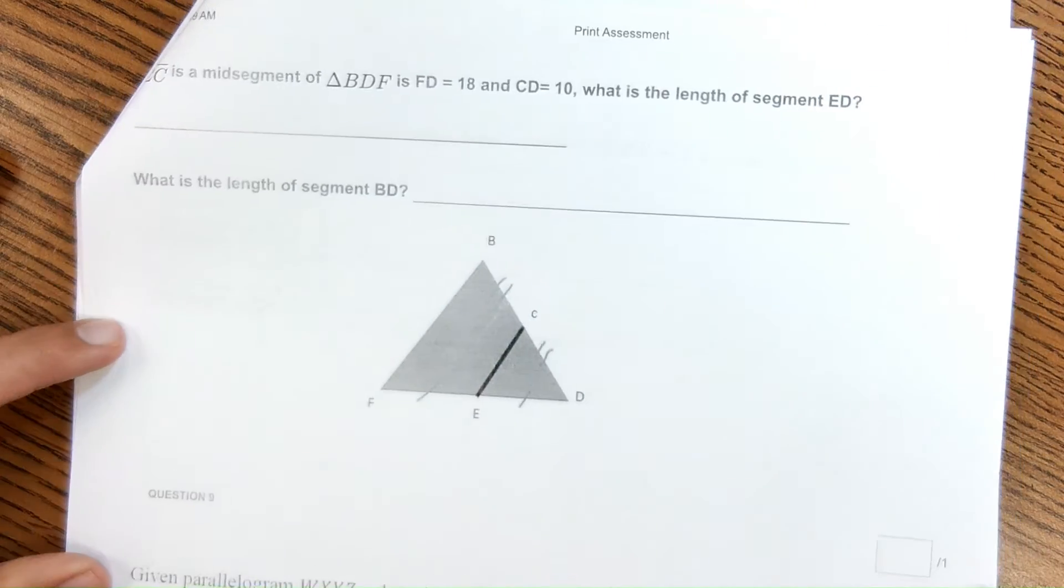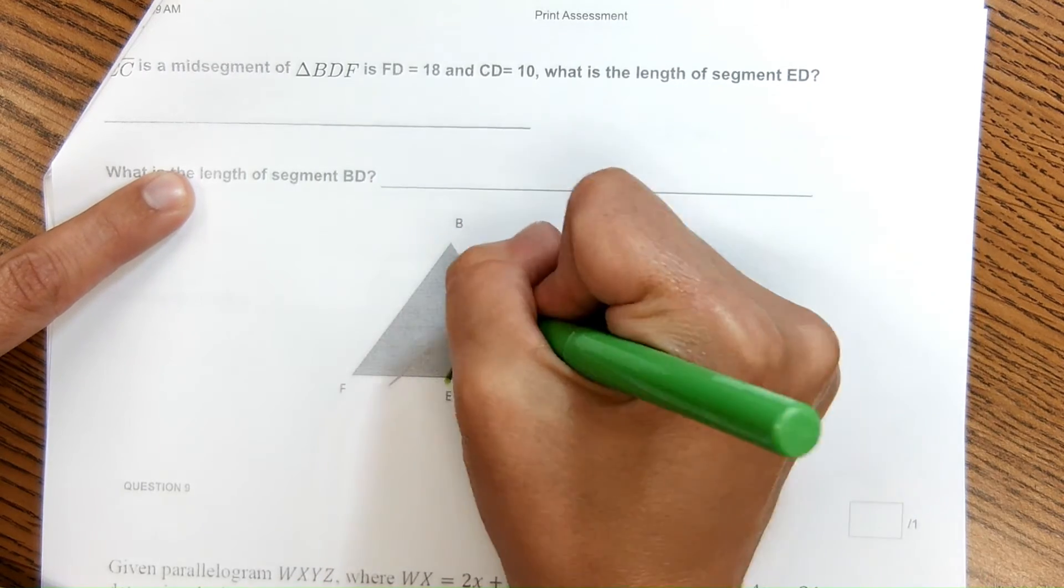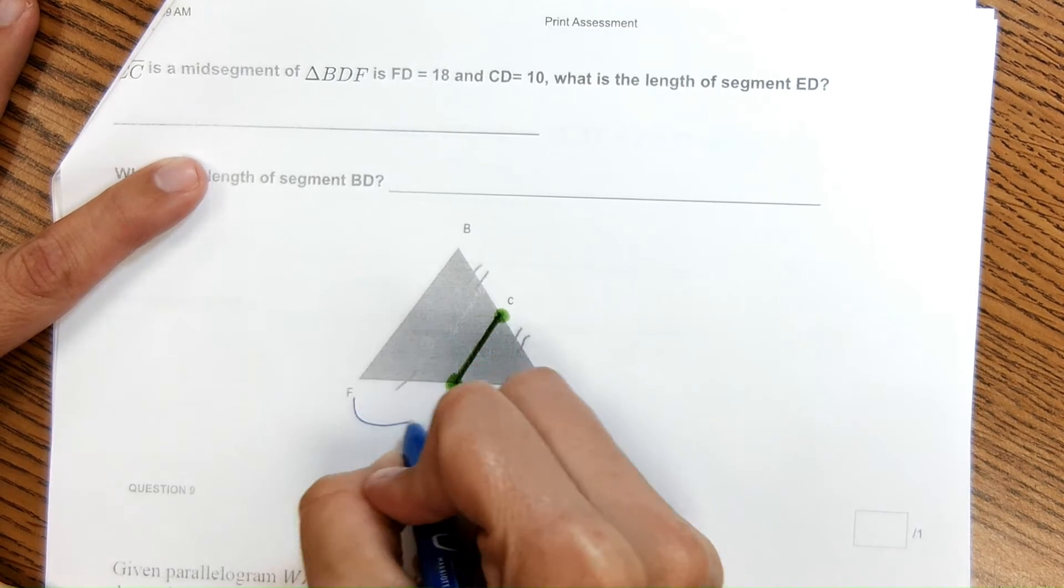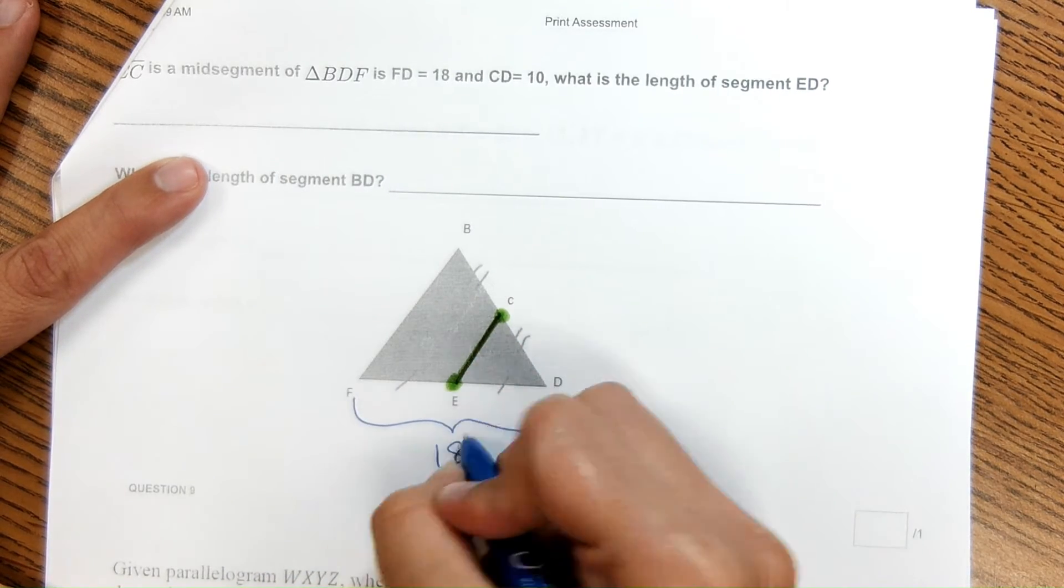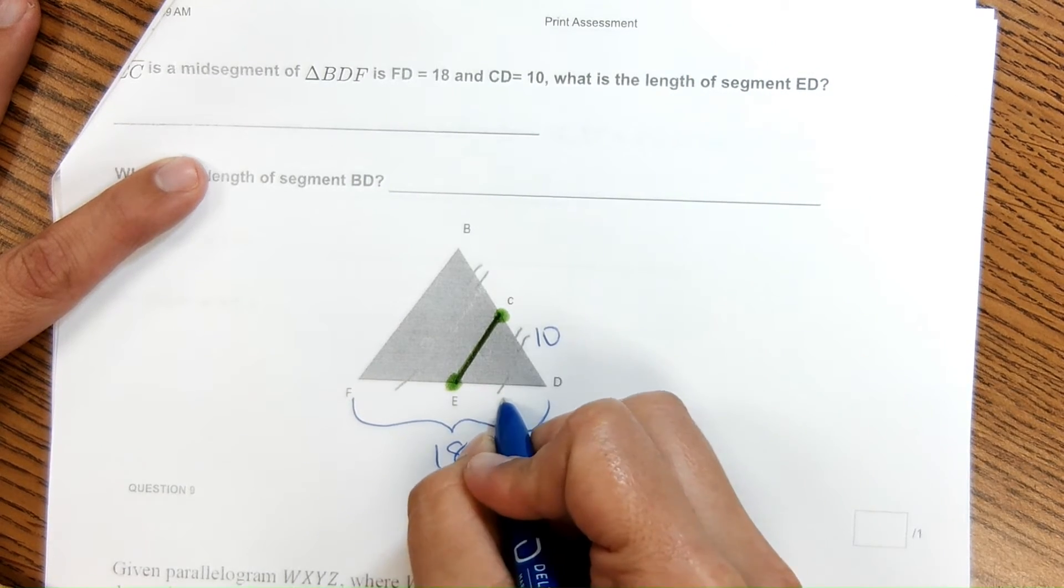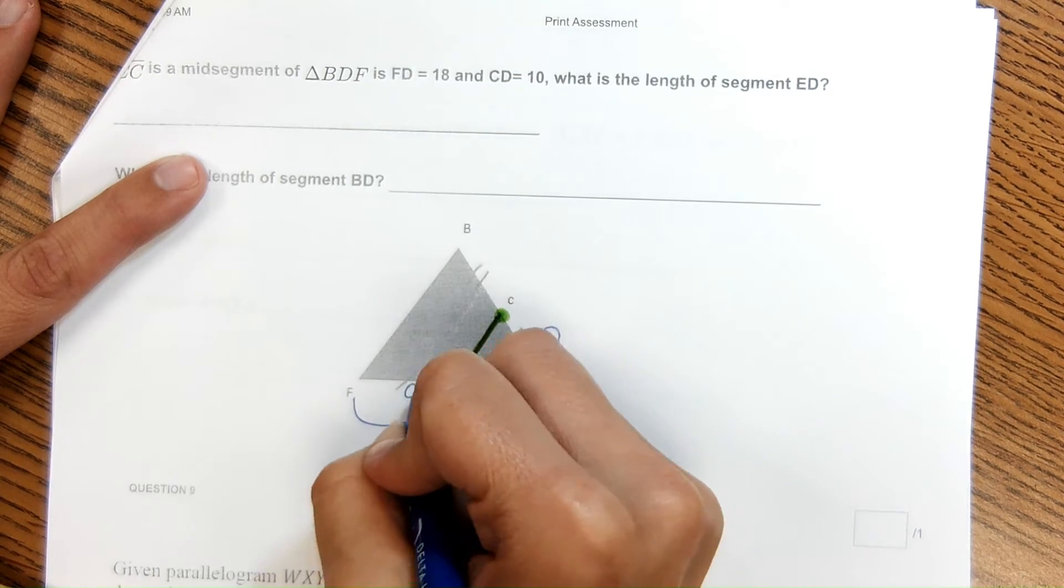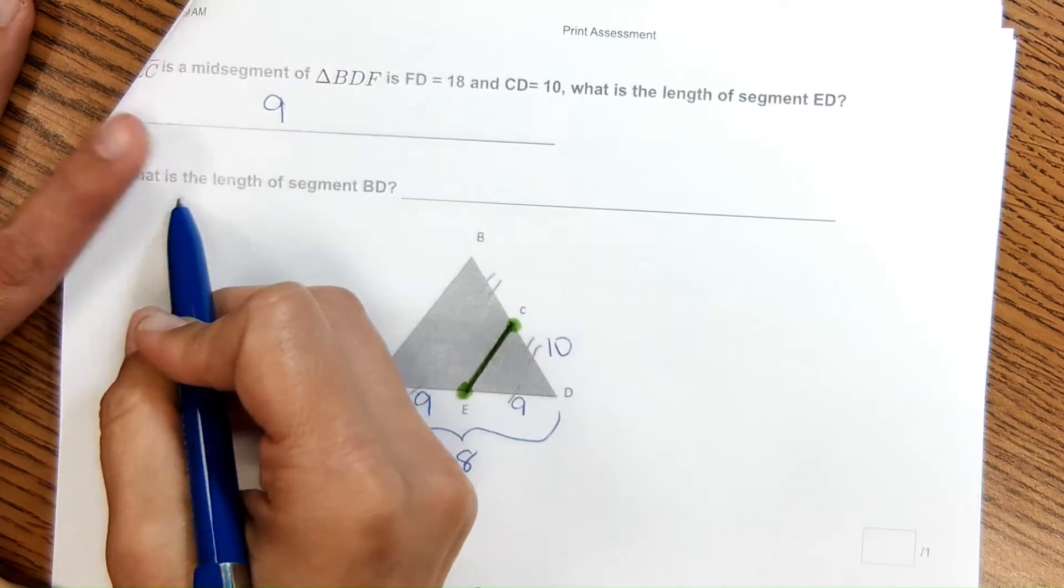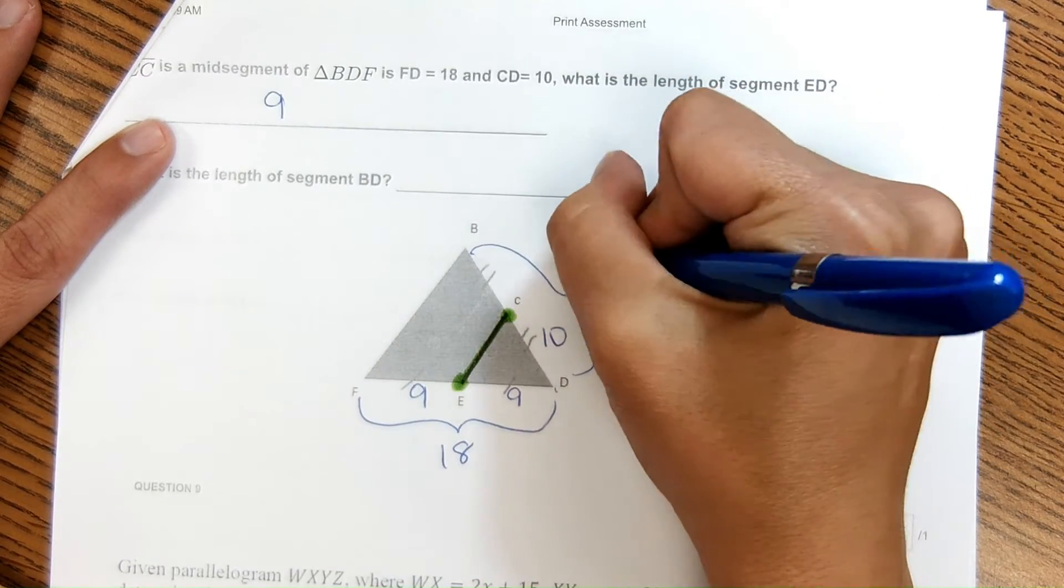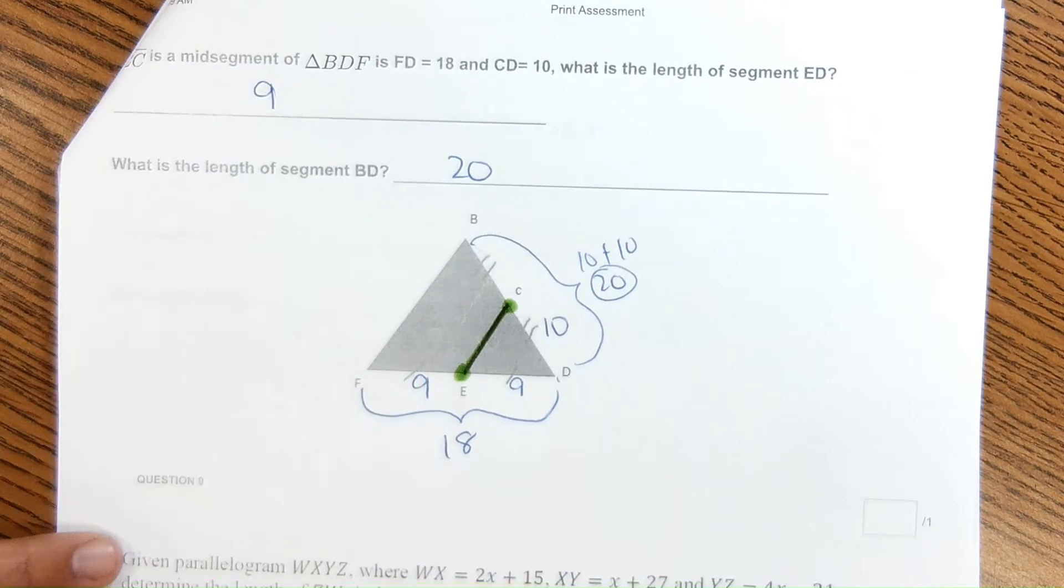Another similar problem. I like these because they're pretty simple. It says that EC is another mid segment, meaning this is the midpoint here of both of those segments. FD, this time it gave us this entire segment, is 18. CD is 10. What is the length of ED right here? Well, if this whole thing is 18 and it's split up in half, then this would be 9 and 9 and ED must be 9. What is the length of segment BD? Well, this whole thing, 10 plus 10 would be 20. So it is 20.